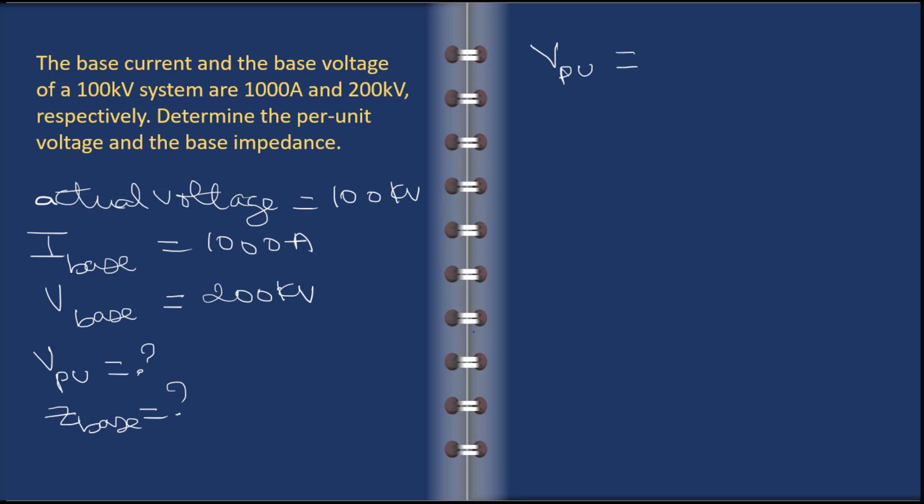If it's current, it's actual current divided by the base current. So V per unit is equal to actual voltage divided by base voltage.